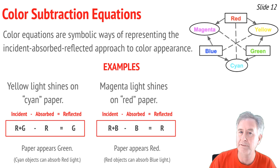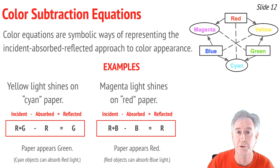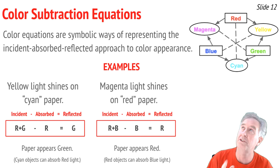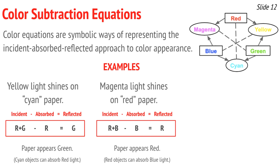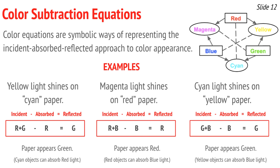For our final equation example, cyan light on yellow paper. Cyan light is G + B, and yellow paper absorbs blue, so G + B − B = G. That paper looks green. That's how you write color subtraction equations.